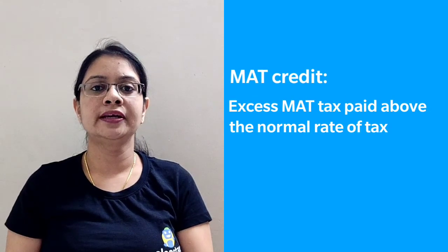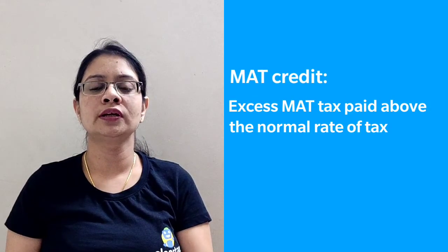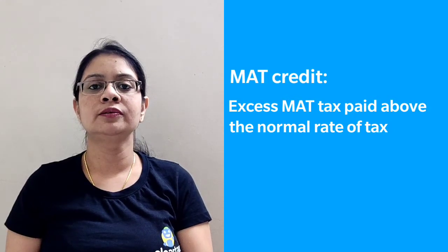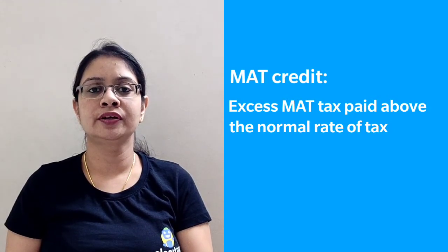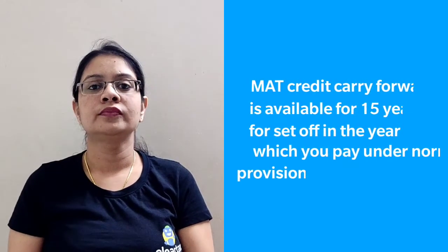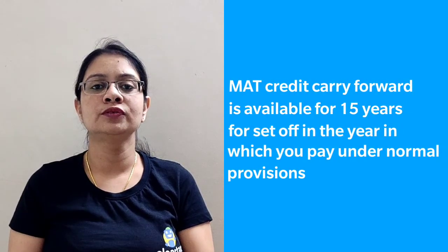In case a company is paying its tax under MAT, it can also claim a credit of the MAT tax. The credit will be available for the excess amount of tax paid by way of MAT over and above the normal provisions. The carry forward of the MAT credit is available for a period of 15 years. In the year in which the company wishes to claim a credit, the credit is available to the extent of the difference between the tax payable under the normal provisions as reduced by the tax payable under the MAT provisions for such year.